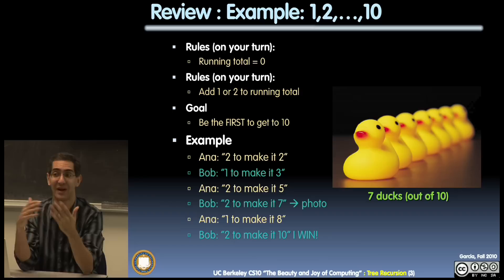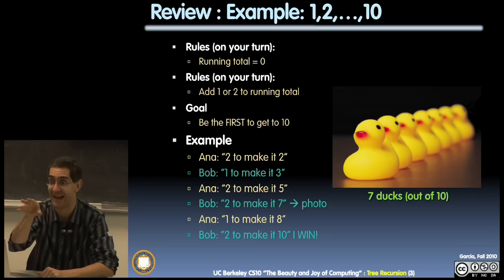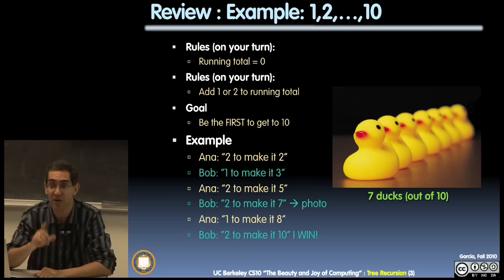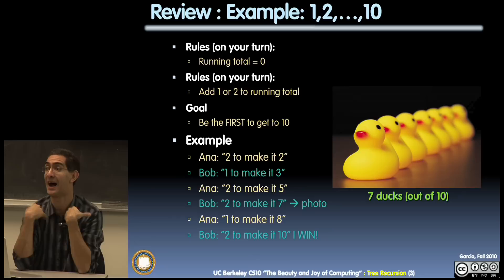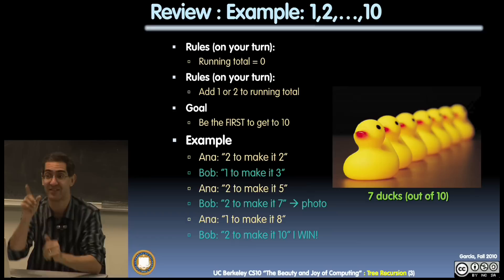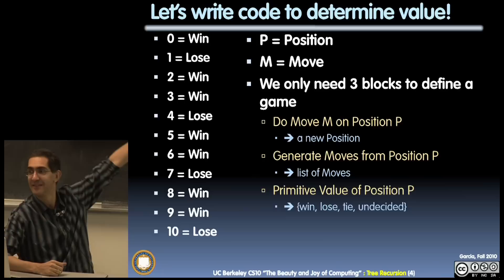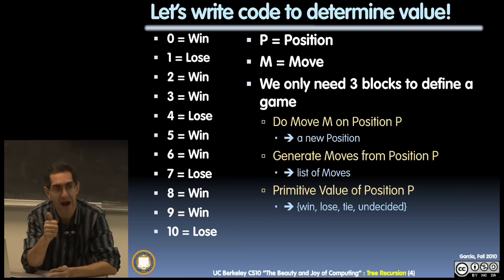One is a win — you go first, you say one, and the opponent is handed a losing position. Whatever they say, you say the opposite. If they say one, you say two; if they say two, you say one. Seven is a lose; ten is a lose — because getting to ten is the winning move, so if you're sitting at ten the other guy got there and you've lost. We're going to try to solve this game using higher-order functions, lambda, and recursion.